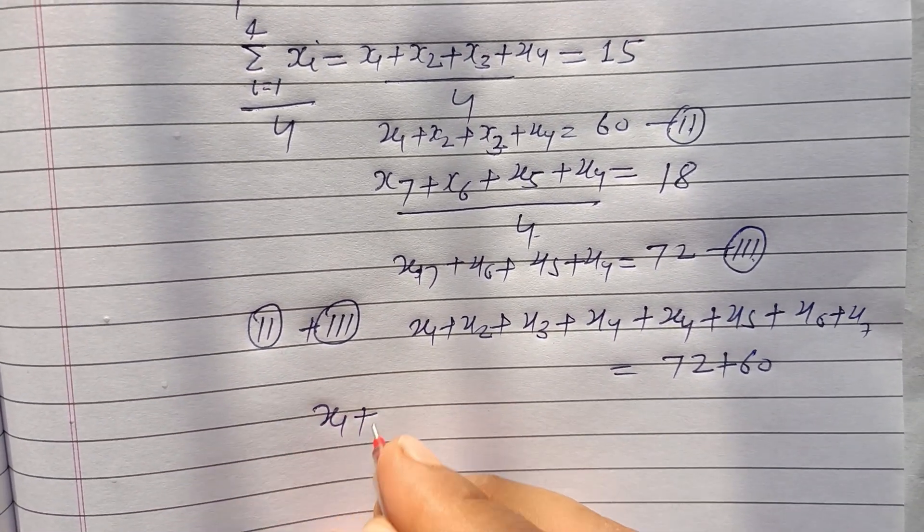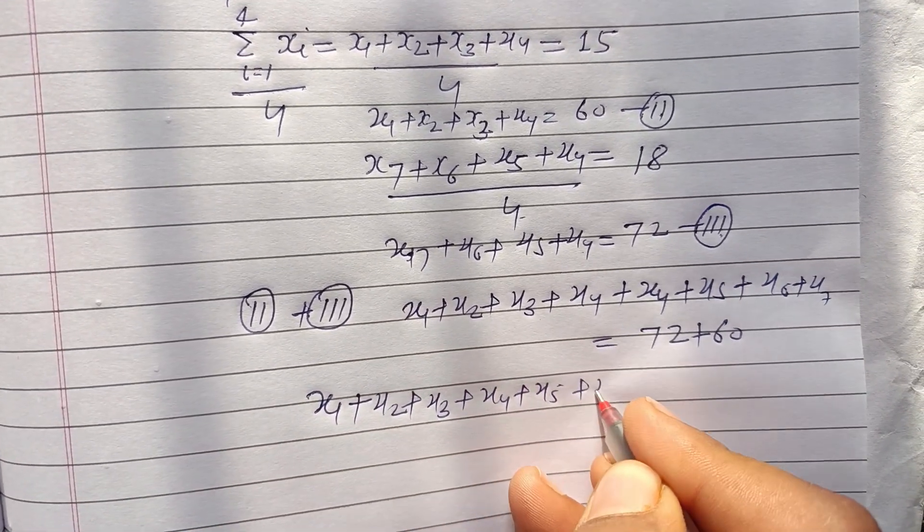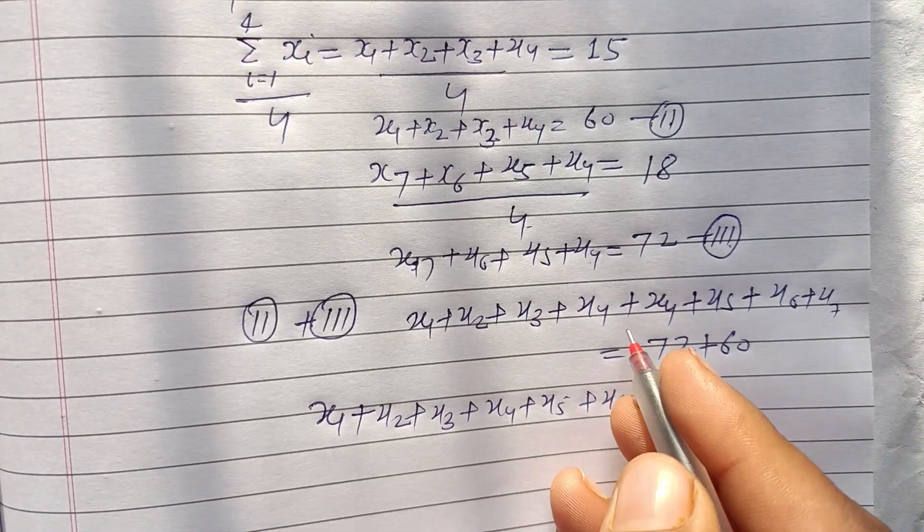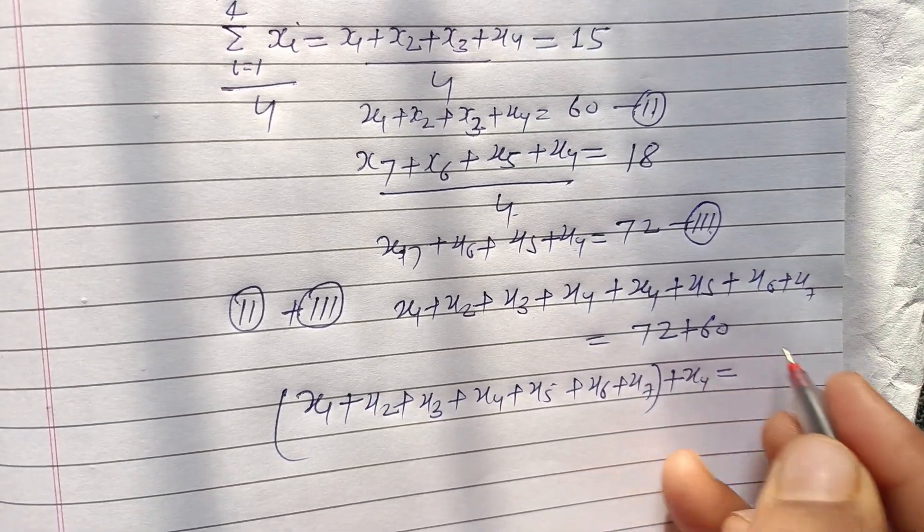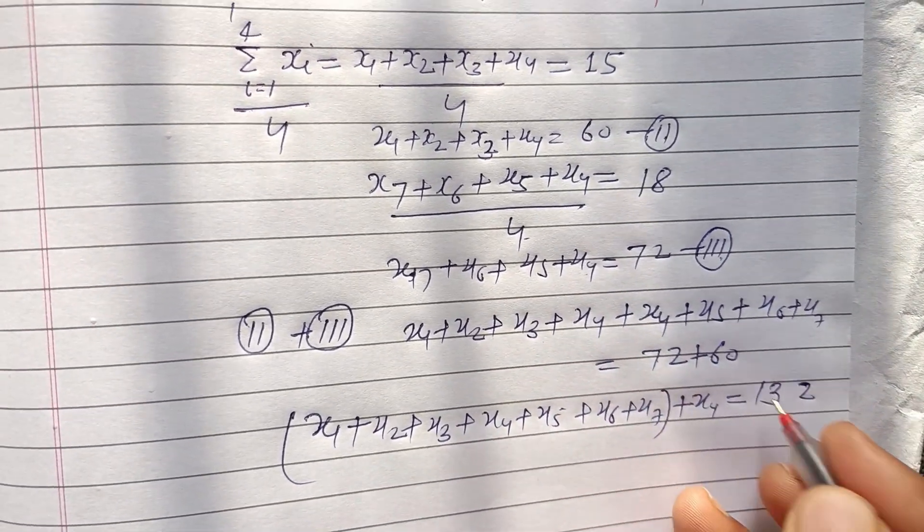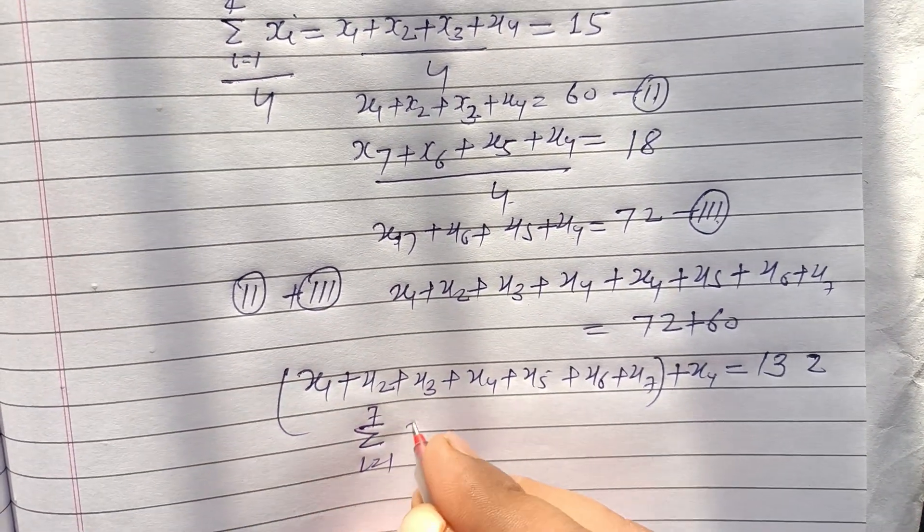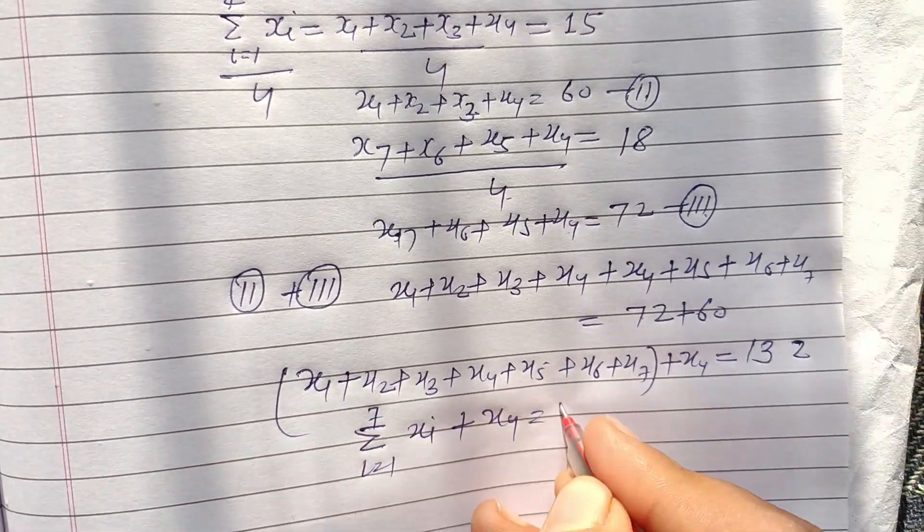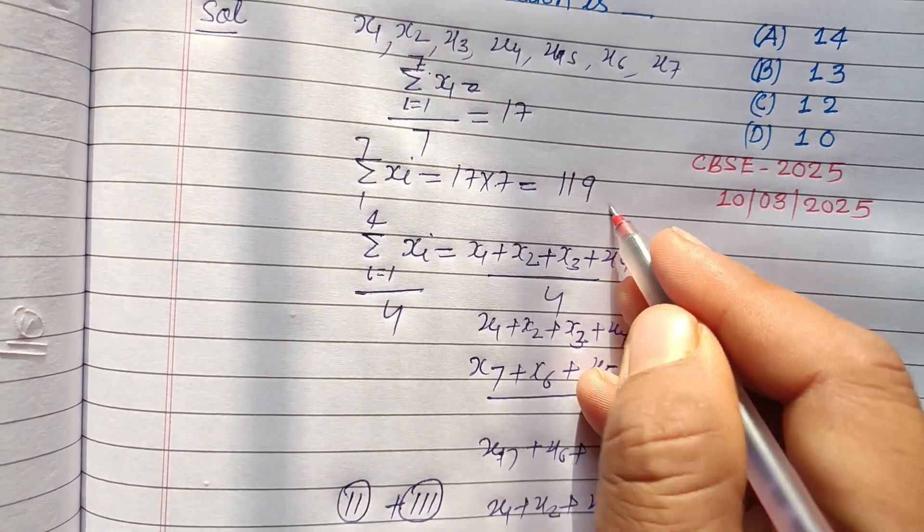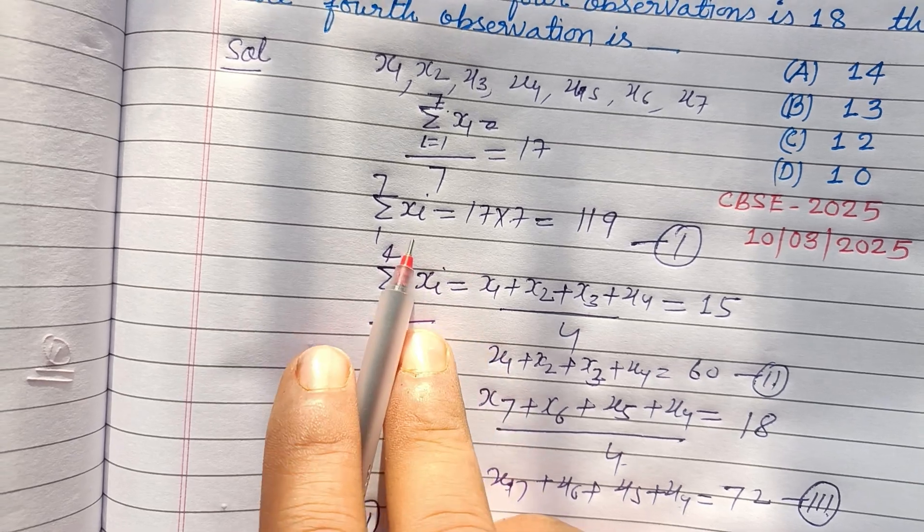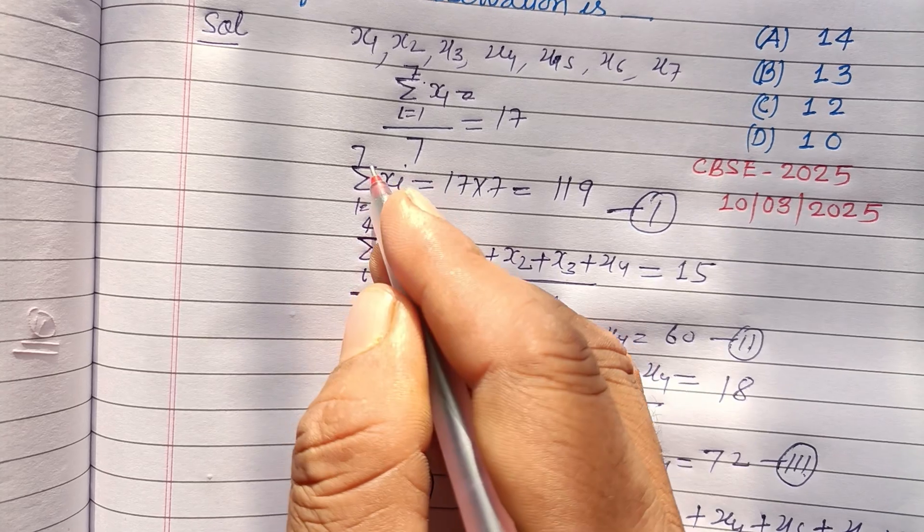Here x1 plus x2 plus x3 plus x4 plus x5 plus x6 plus x7 plus x4 is extra here, and that equals 132. And this is what? This is sigma i equals 1 to 7 of xi plus x4 equals 132. We put the value from the first equation.